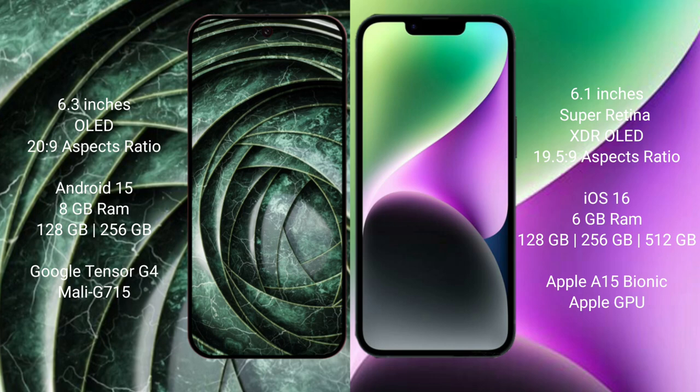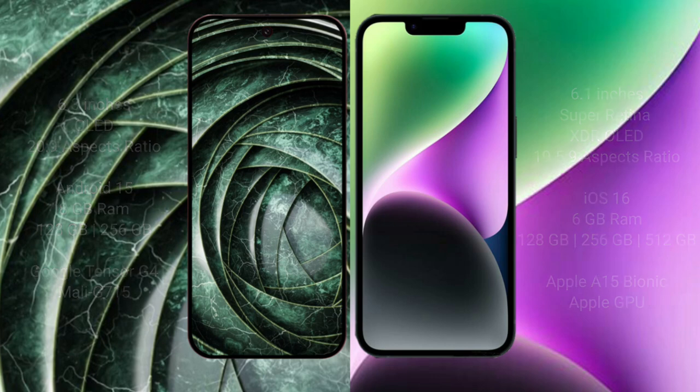Google Pixel 9a comes with 8GB RAM and 28GB to 56GB, 512GB internal storage, with Google Tensor G4 processor and Mali GPU. iPhone 14 comes with 8GB RAM and 28GB to 56GB, 512GB internal storage, with Apple F15 1.8 processor and Apple Graphic GPU.